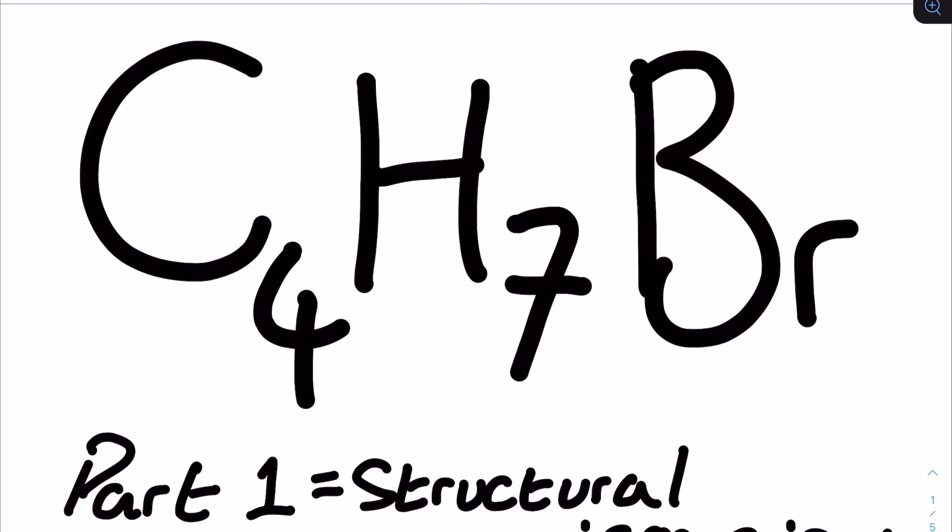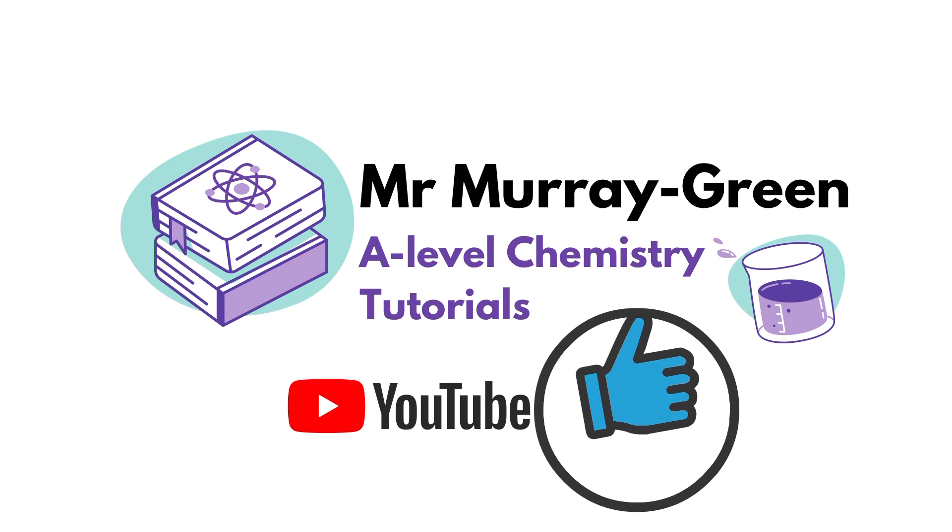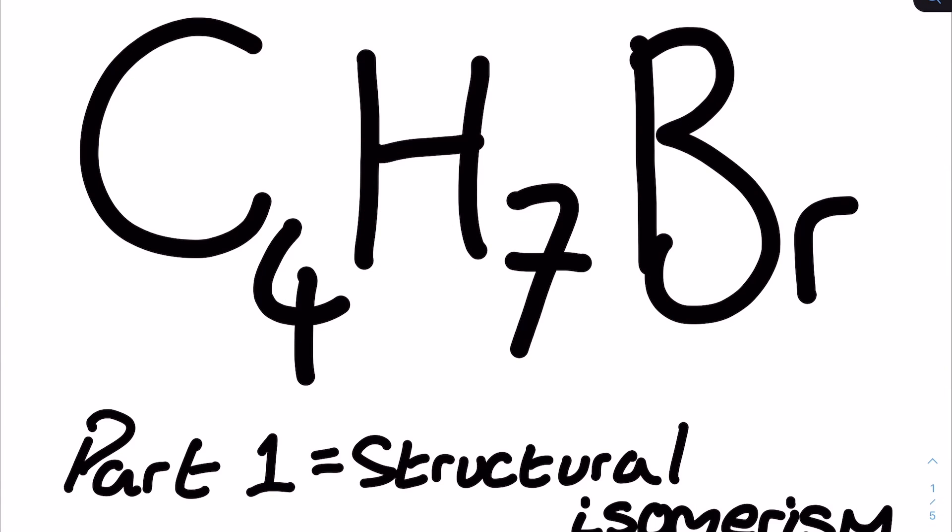Optical isomerism is a type of stereo isomerism you would encounter in the second year of your A-level. Before I reveal the 12 different structural isomers of C4H7Br, I recommend you have a go at drawing and naming the structures yourself — there are 12 of them.